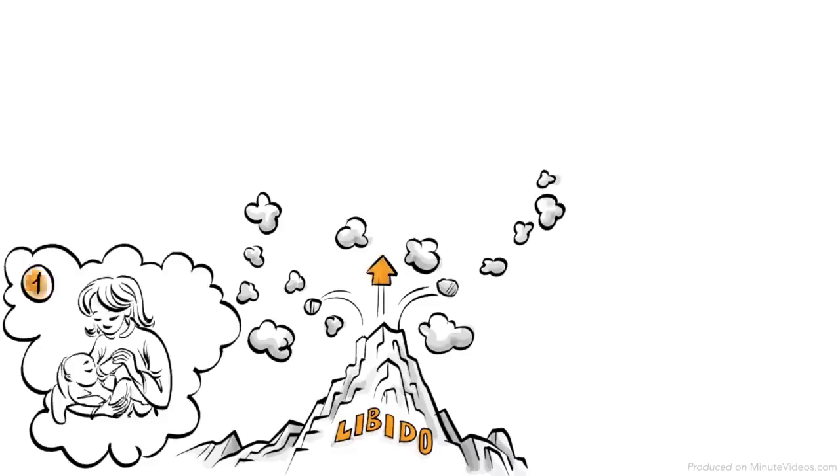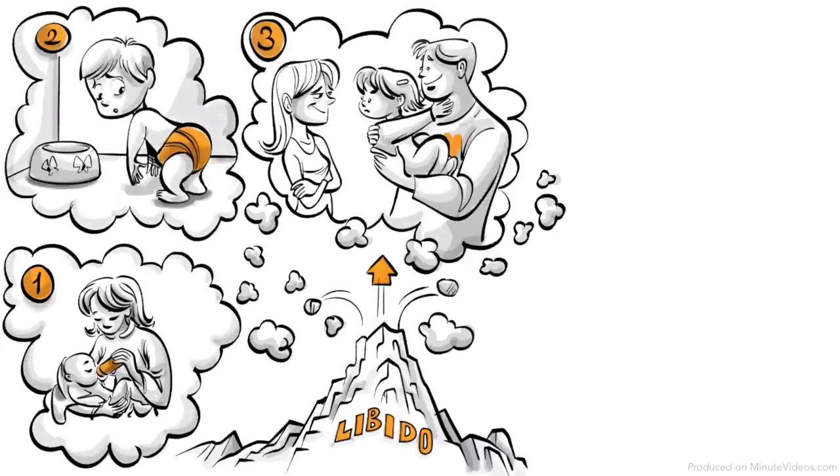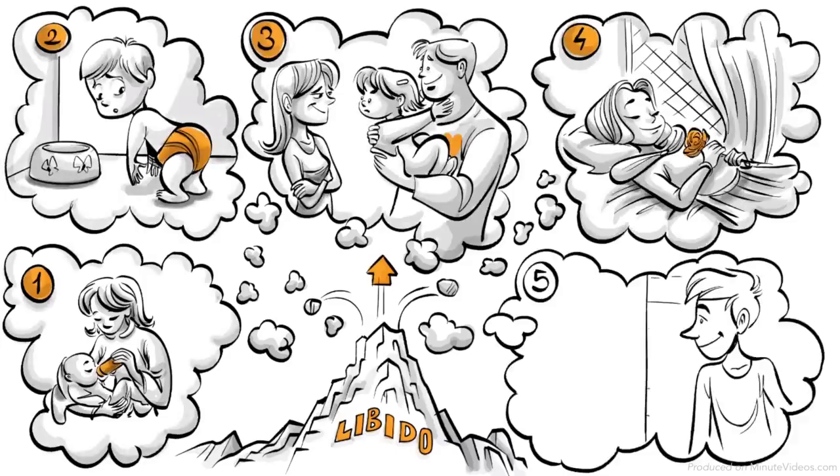The phases are called oral, anal, phallic, latency and genital.